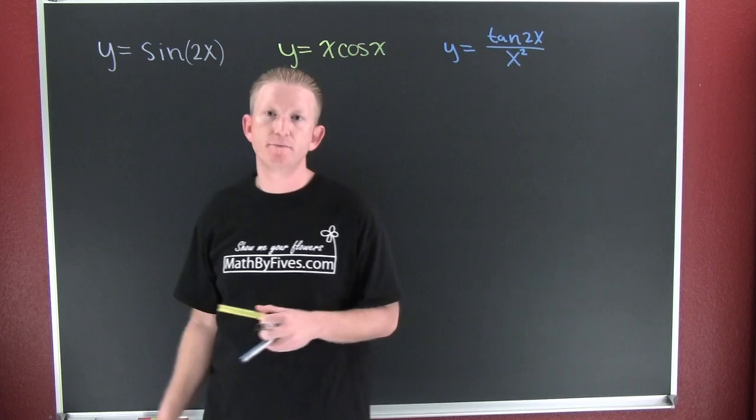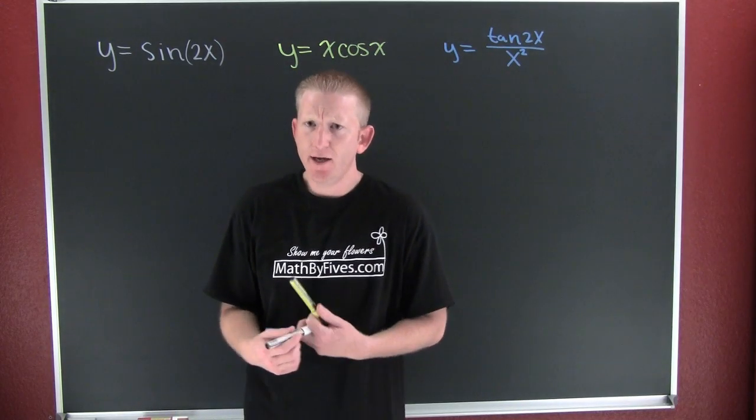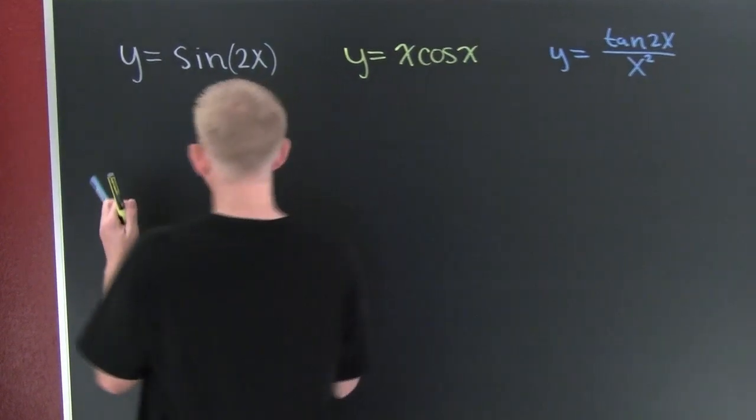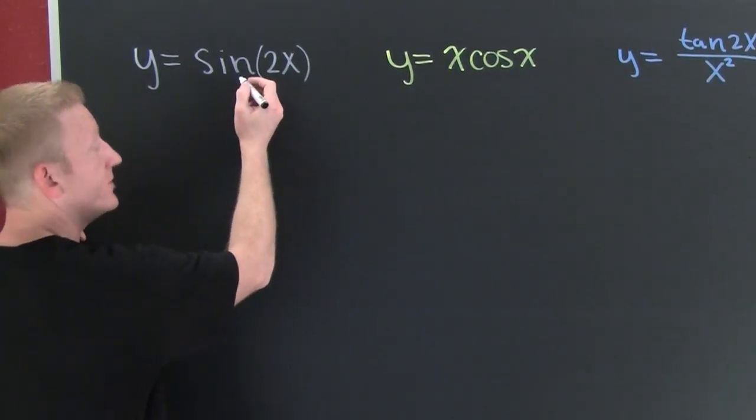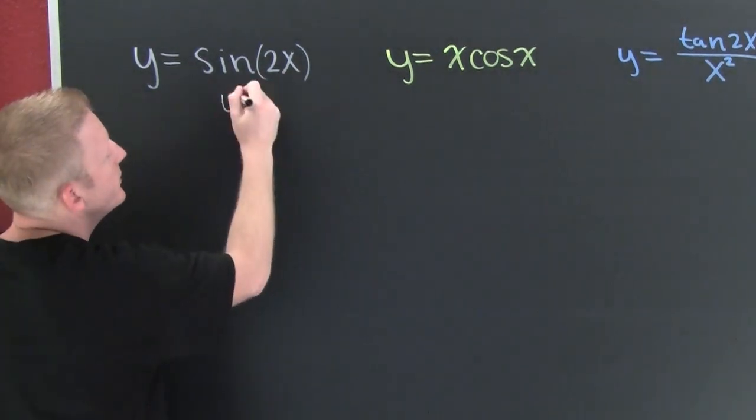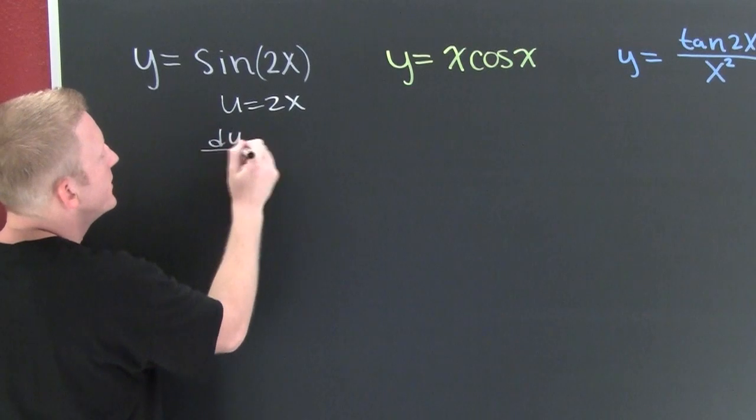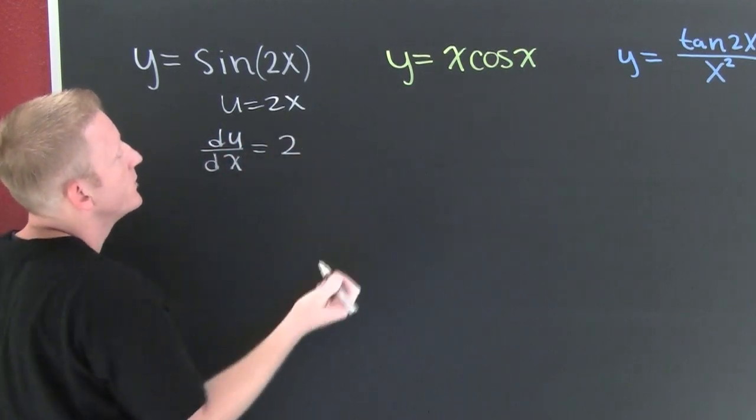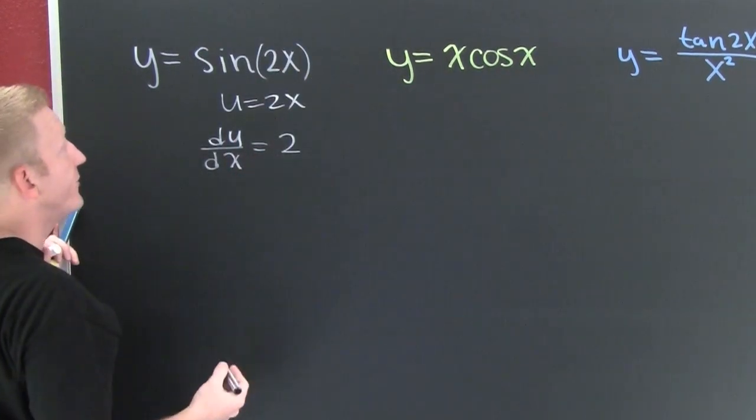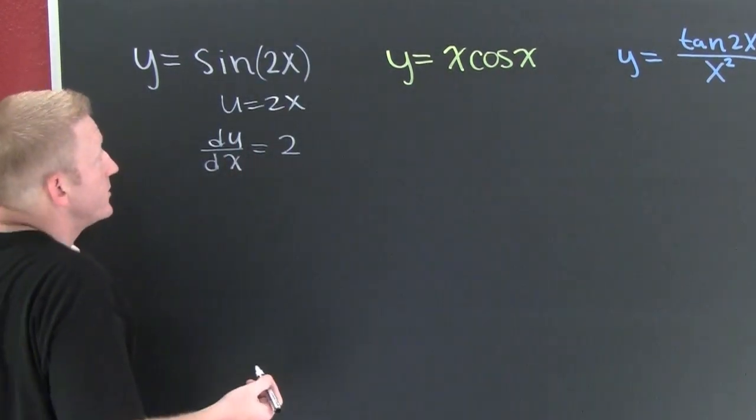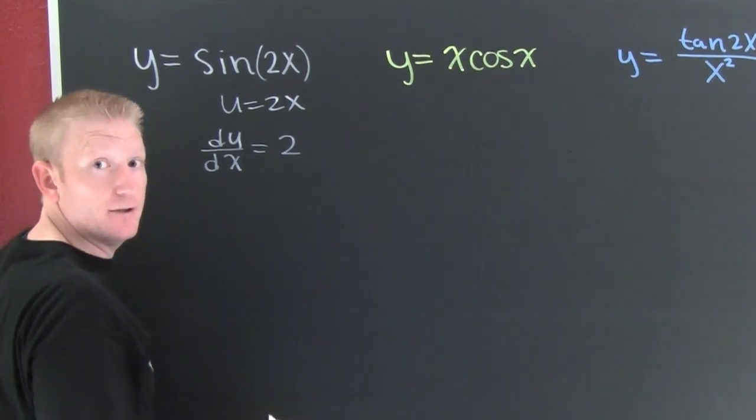Now that we have our basic forms all rememberized, why don't we go through and apply a few. In this example, take a look at this. I want to take the derivative of the sine. Here my u is going to be 2x, so then du dx is going to be 2. So now I can take the derivative of the form. I know that the derivative of the sine of u is going to be the cosine of u multiplied by du dx.